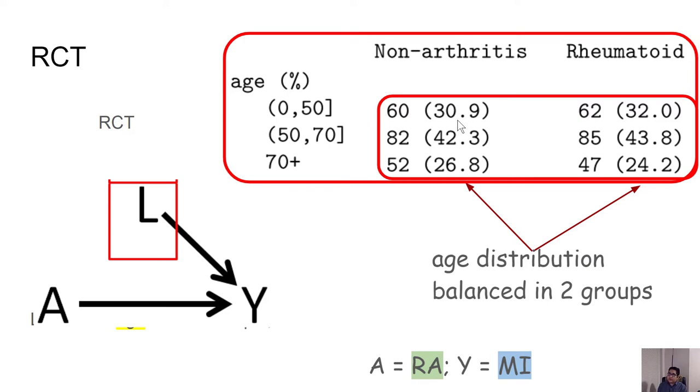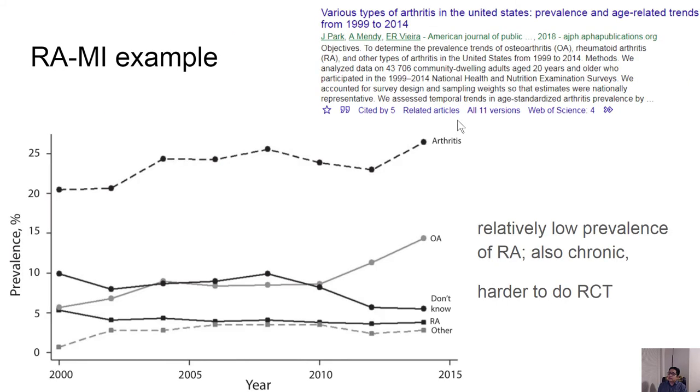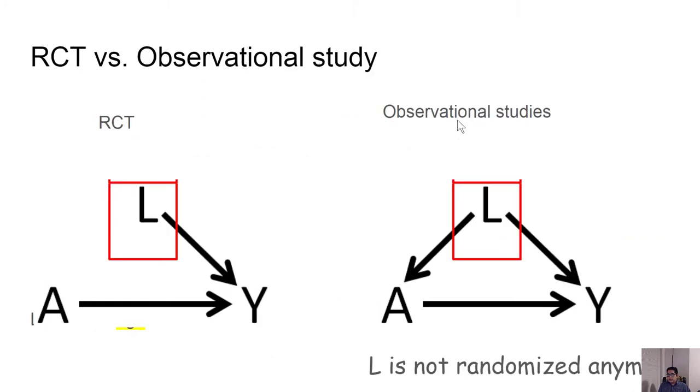Rheumatoid arthritis has very low prevalence and this is also a chronic disease, so you will have to follow the patients for a very long time to watch the outcome, the myocardial infarction or heart attack. So doing a randomized clinical trial might not be feasible, and what is the alternative? Obviously we have this alternative of having access to the healthcare dataset from hospitals and electronic healthcare datasets for billing purposes.